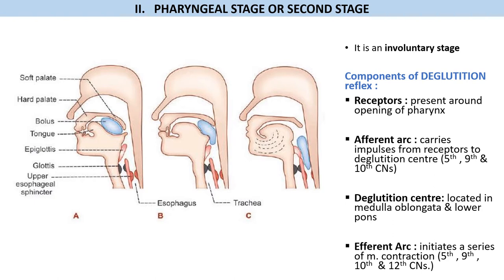The components of the swallowing reflex are: receptors present around the pharynx, especially over the tonsillar pillars, stimulated by movement of the bolus from mouth into the pharynx; the afferent arc formed by the fifth, ninth, and tenth cranial nerves carrying impulses to the deglutition center; the deglutition center located in the medulla oblongata and lower pons; and the efferent arc comprising the fifth, ninth, tenth, and twelfth cranial nerves initiating muscular contractions of the pharynx and tongue.